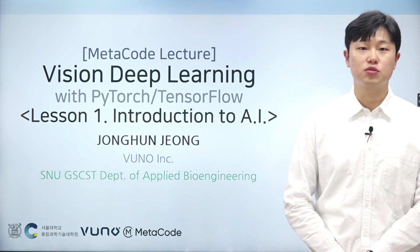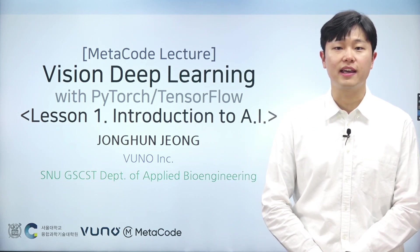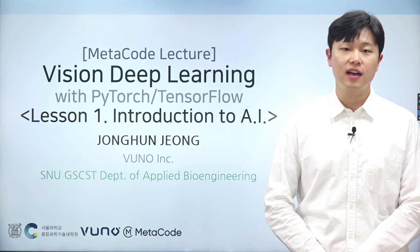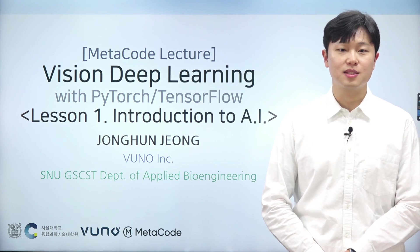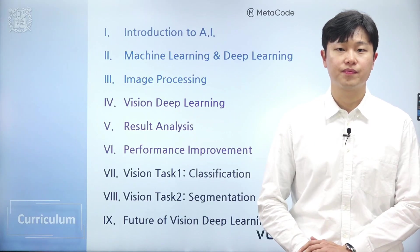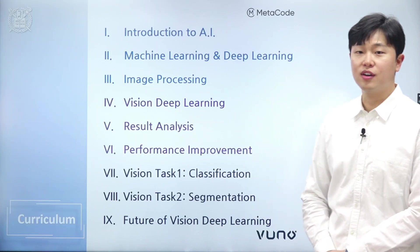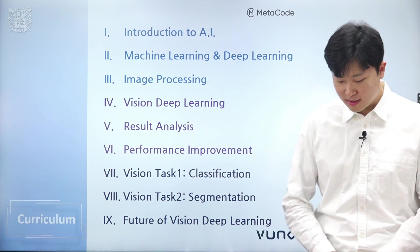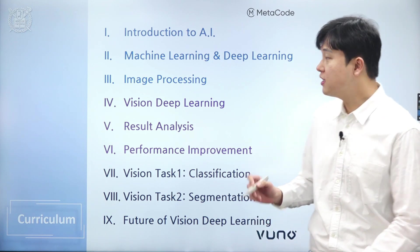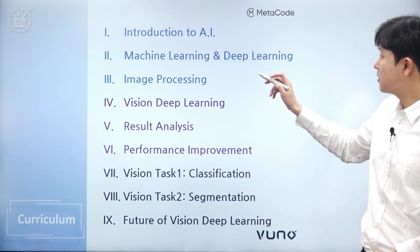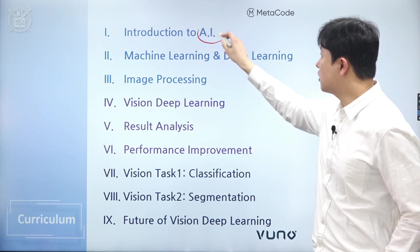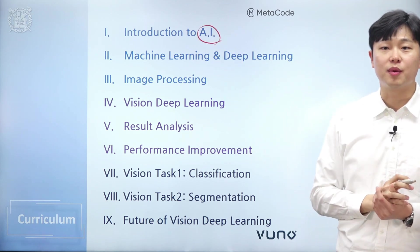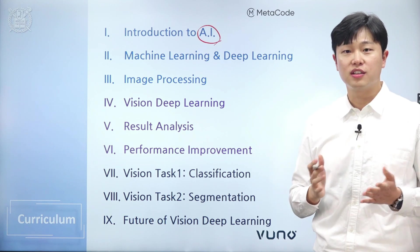Today, our topic is introduction to AI. In this lecture, we'll be covering the basic concepts of artificial intelligence. Let's take a look at the course outline. This course consists of nine total lectures. The first lecture is introduction to artificial intelligence. In this lecture, we'll define what AI is by explaining some essential terms.